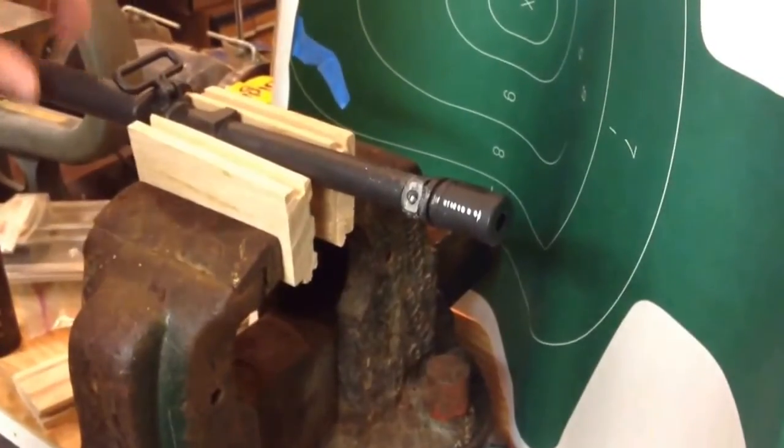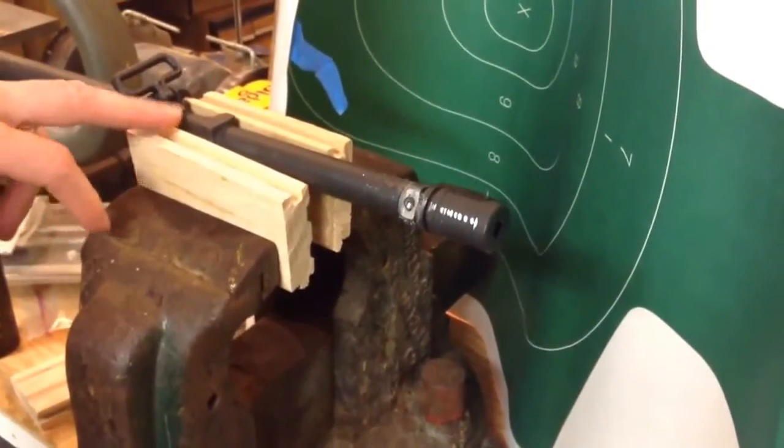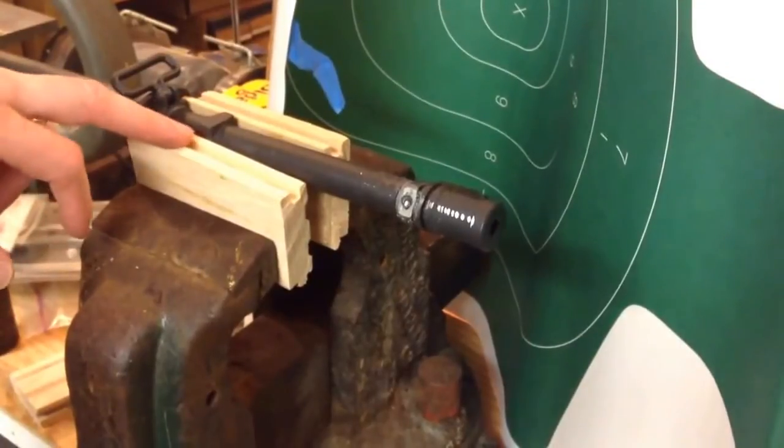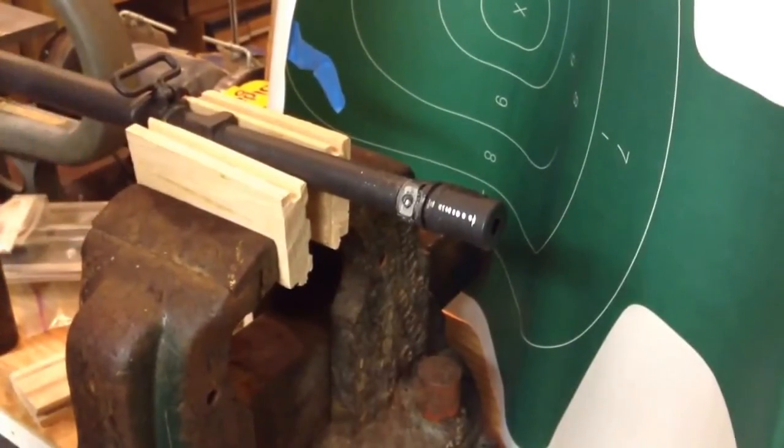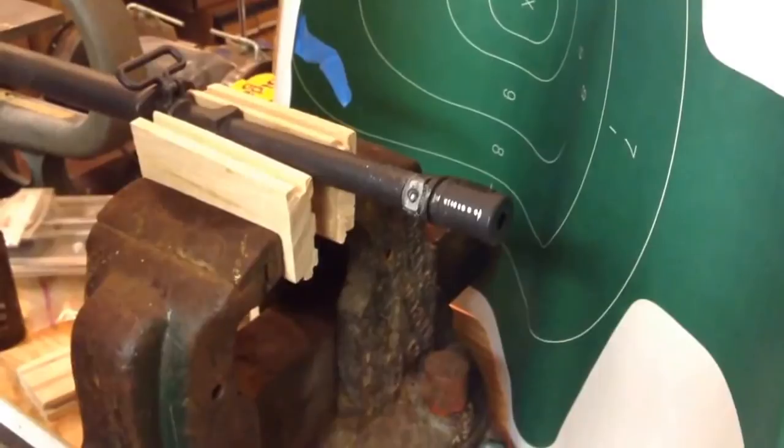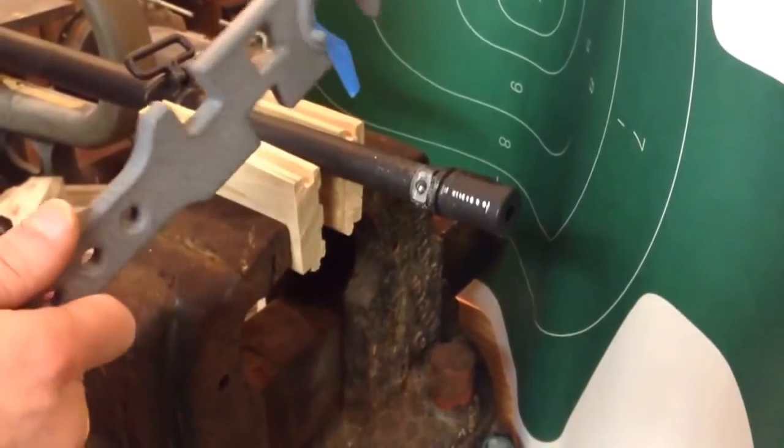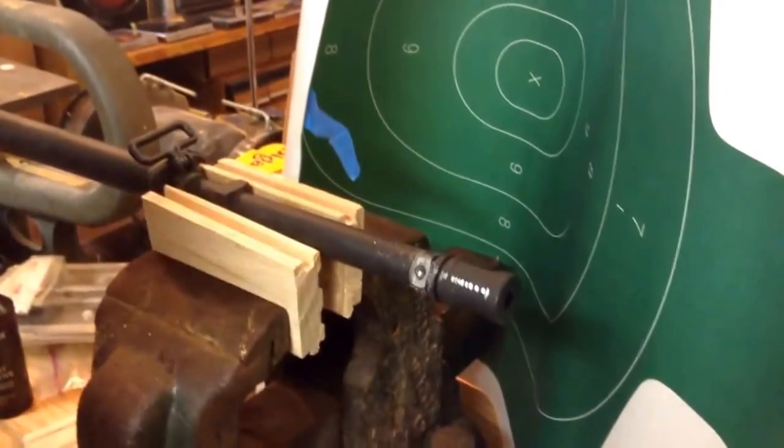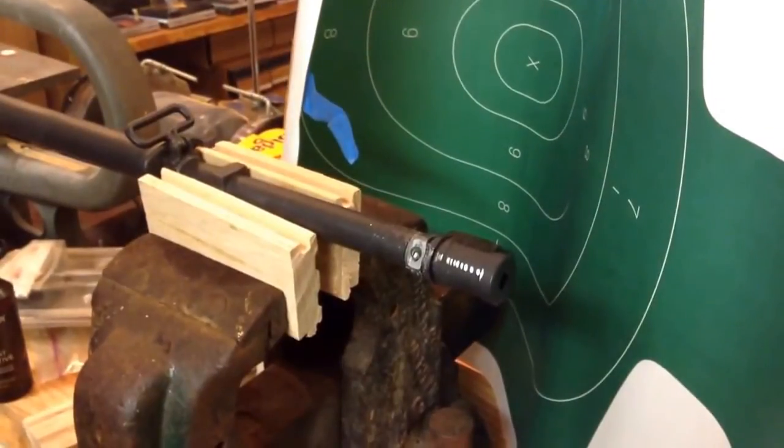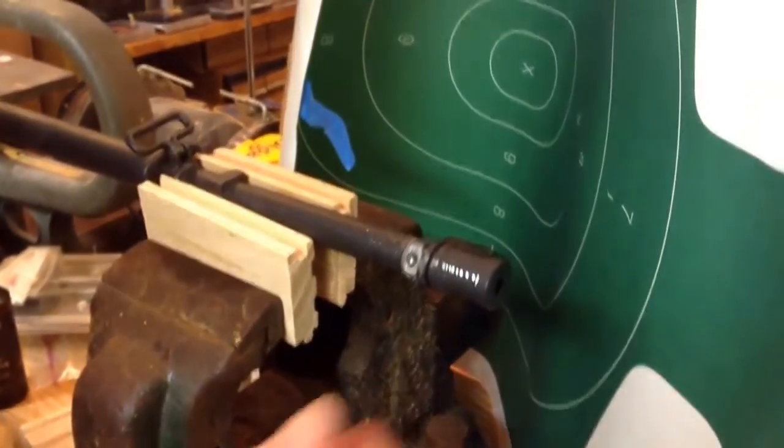So anyway, I just repositioned the barrel in the vice, clamping on the I guess the outgoing front sight base. And then I was able to take the barrel wrench multi-tool and I started to turn the flash suppressor.